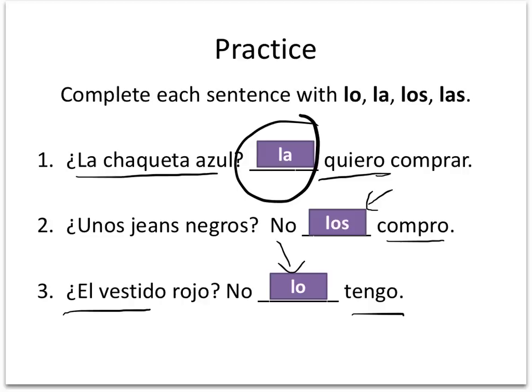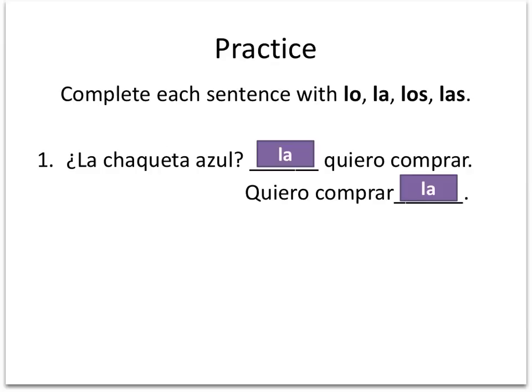Now, out of these three examples, there is one where you could actually put the direct object pronoun in two places. If you said it's number one, then you are correct. La chaqueta azul — la quiero comprar. I've got two verbs: the conjugated one, quiero, and the infinitive one, comprar, because it still ends in AR. So another option would be: quiero comprarla — and keep in mind, this would be one word because you're attaching la to the end of it.